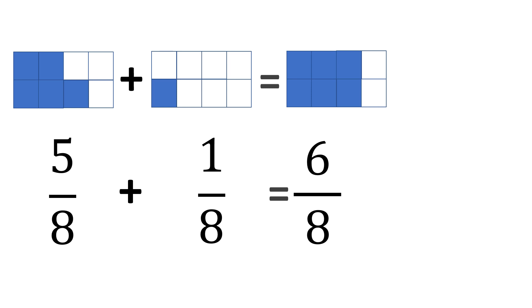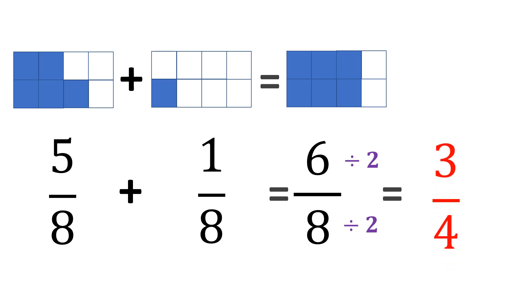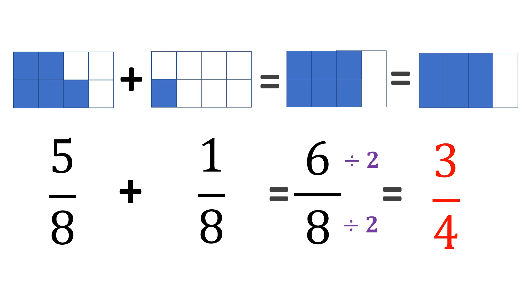But this is not yet the final answer because it can be reduced. How will you know a fraction can be reduced? If the numerator and the denominator can be divided by a common divisor. In this case, both 6 and 8 are divisible by 2. So let us reduce this — it equals 3 fourths. The final answer is 3 fourths. And if we remove the horizontal slice from the figure, it becomes 3 fourths, confirming that 6 eighths is the same as 3 fourths.